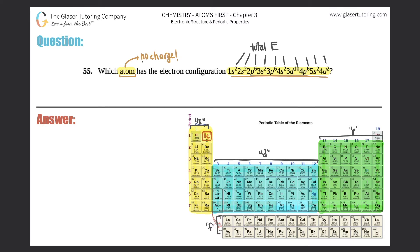And if it's an atom, there's no charge, so it's in its ground state, which means the total number of electrons should equal the total number of protons. And what does the total number of protons represent? The protons always equal the atomic number. So if I add up all those electrons — 2 plus 2 plus 6 plus 2 plus 6 plus 2 plus 10 plus 6 plus 2 plus 2 — I should get an atomic number of 40.